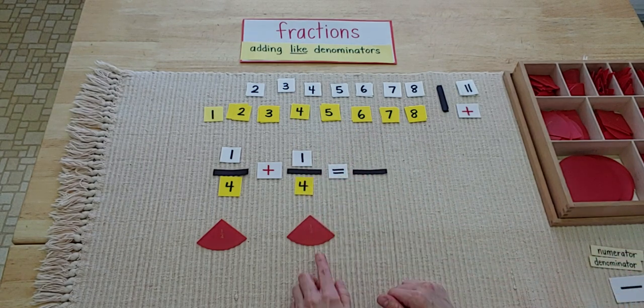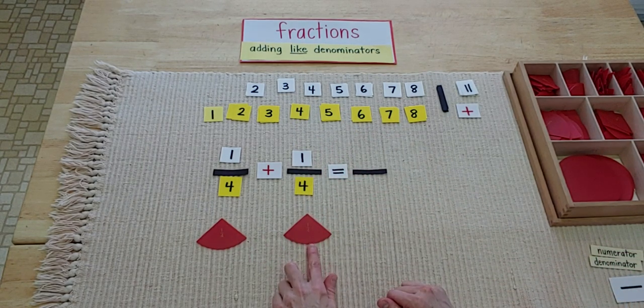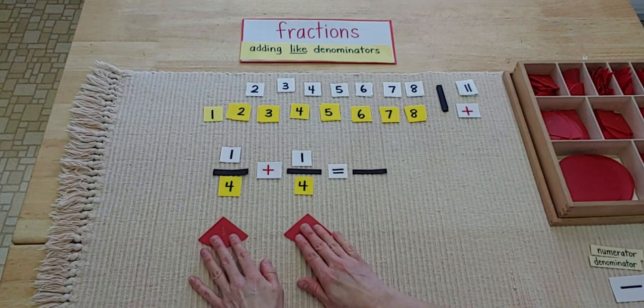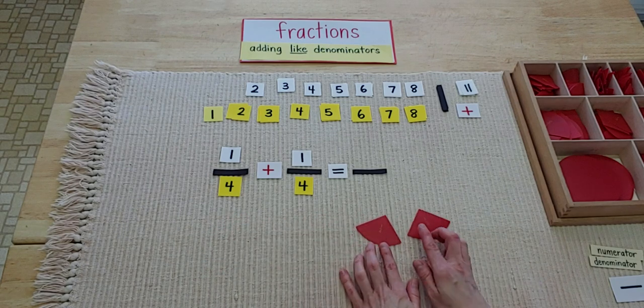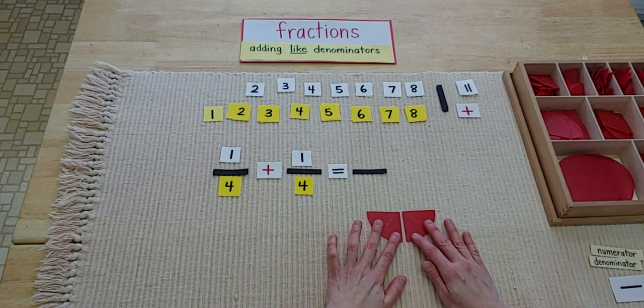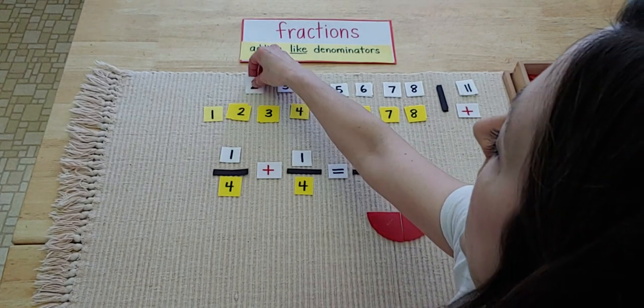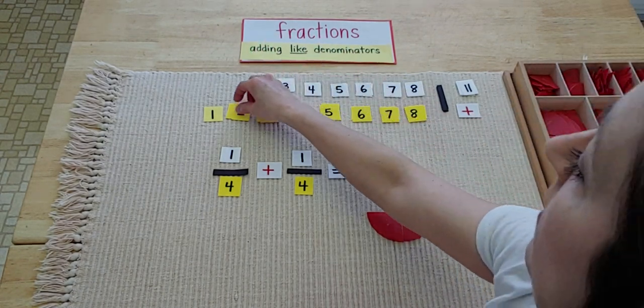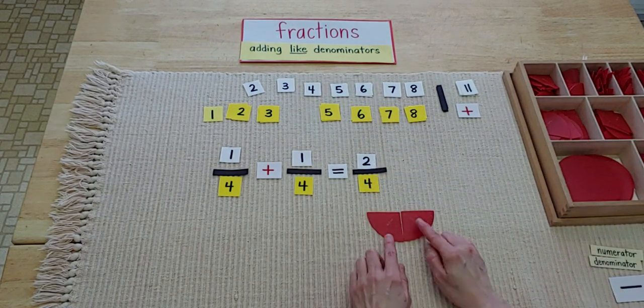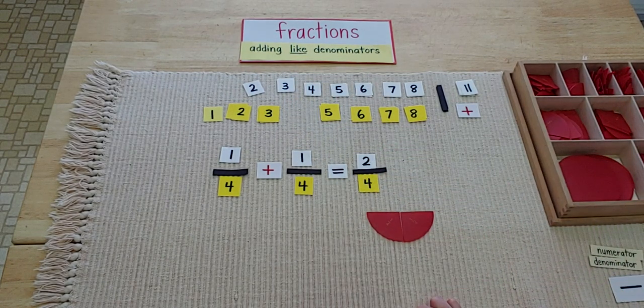Once again, it's the fourths family. Now I'm going to slide my pieces over and try to put them together and count them up. One, two. I had two fourths. I had two fourths pieces of cake.